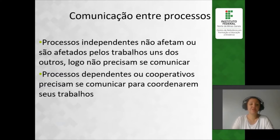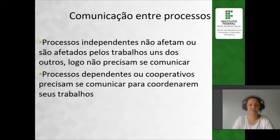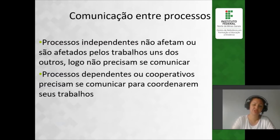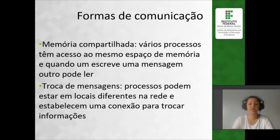Programa dependente de outro. E programa independente — por exemplo, o Word. O Word é independente de qualquer outro programa que está funcionando. Ele não precisa de nenhum outro programa para fazer nenhuma tarefa e não é afetado por nenhum outro programa. Quando o processo é afetado pela execução de outro programa, dizemos que são processos dependentes. Quando não são afetados, dizemos que são processos independentes.